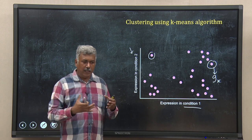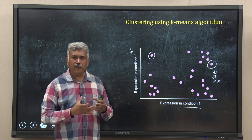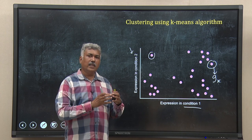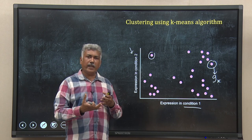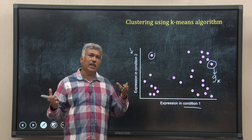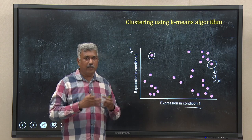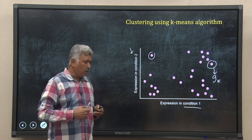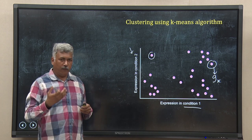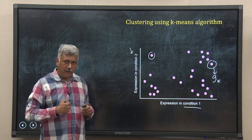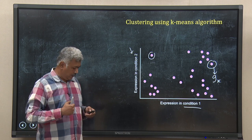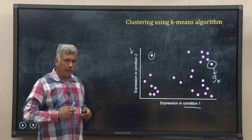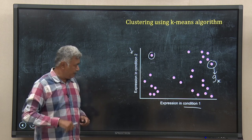I want to find clusters of genes in these data who are behaving in the same fashion, whose expressions are similar. That means, if three genes are in one cluster, their expression pattern in these two experimental conditions are similar, though may not be exactly the same. So how do I perform the k-means algorithm on this? Let us do it step by step visually.